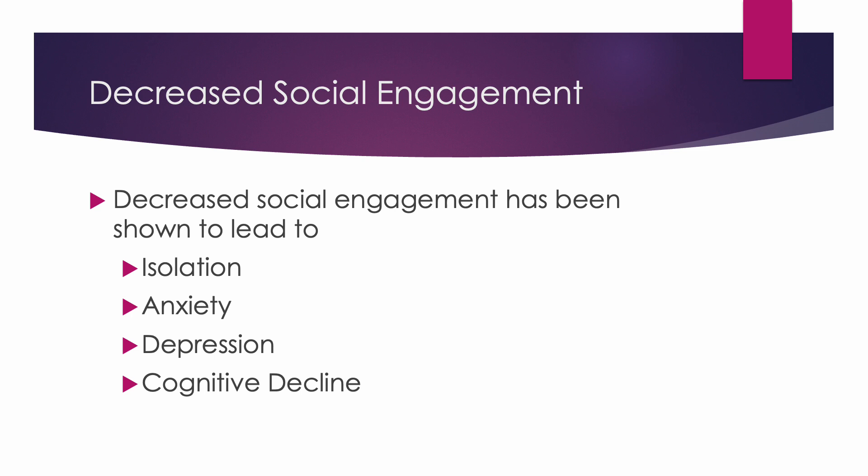Decreased social engagement has become a focus for a lot of research related to healthy aging. It has been shown to have an effect on isolation, anxiety, depression, and cognitive decline. Isolation and anxiety are strongly linked to our desire to go out — thoughts such as, will I be a burden on others? How many times can I ask for repetition before my family or friends are annoyed? These feelings lead to depression due to lack of social engagement with family and peers, and then we start to see concerns for cognitive decline due to lack of intellectual stimulation.